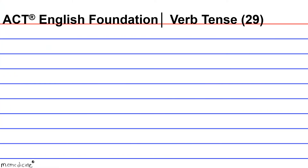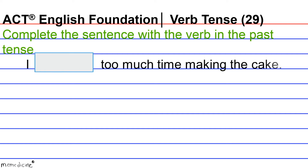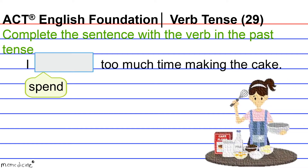ACT English Foundation, Verb Tense, Question 29. Complete the sentence with the verb in the past tense: 'I blank too much time making the cake.' The task here is to shift the tense of 'spend' to its simple past tense verb form.